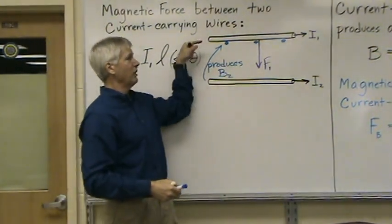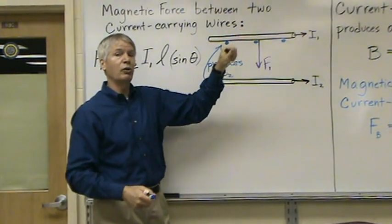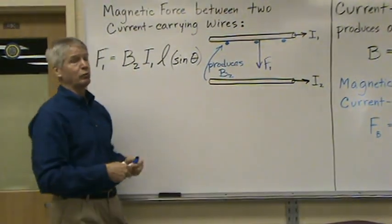We've got current this way, magnetic field out of the board, so sine of 90 is 1. That term will drop out.